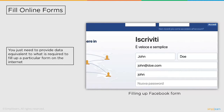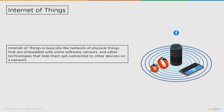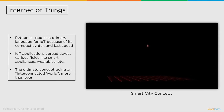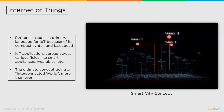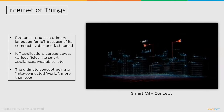Followed by fill online forms, we have Internet of Things. Lastly, let's discuss where Python fits in the Internet of Things. IoT is basically the network of physical things embedded with software, sensors, and other technologies that help them connect to other devices on a network. Python provides various modules for developing services and applications for many IoT devices like Arduino, Raspberry Pi, etc. Packages like MRAA, Sockets, MySQL database, and others are popularly used for IoT applications. Python is used as a primary language for IoT because of its compact syntax and fast runtime speed. IoT applications spread across various fields like smart appliances, wearables, and more — embodying the ultimate concept of an interconnected world.